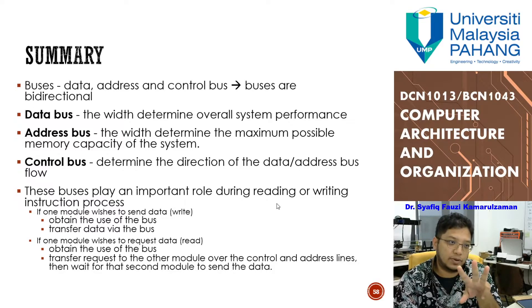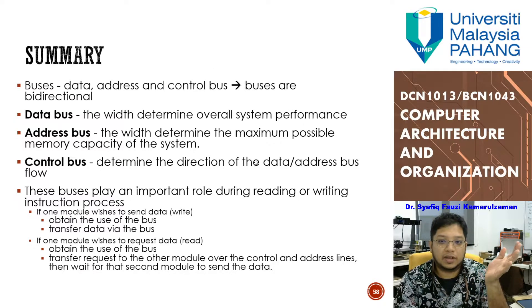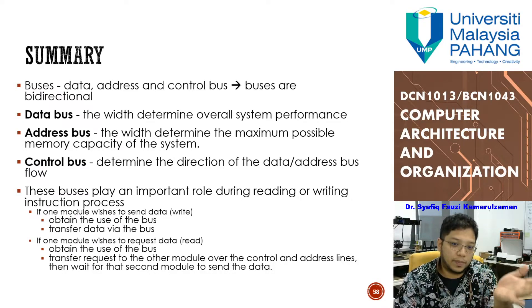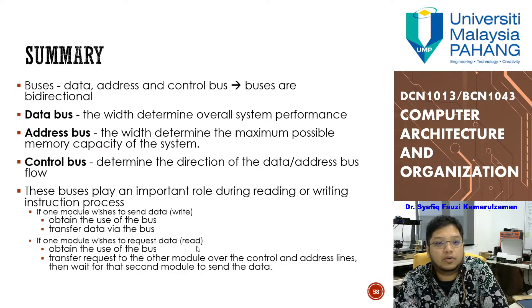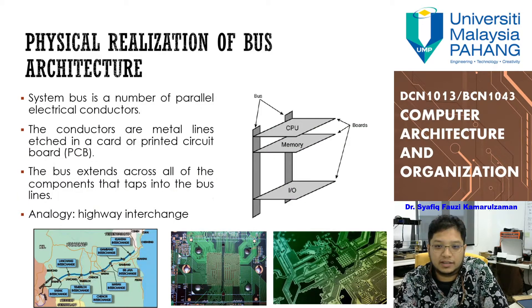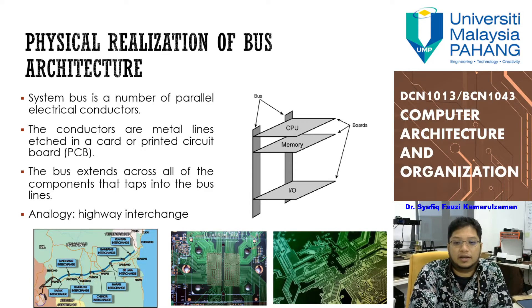On the system bus, you need to know three things: the data bus, address bus, and control bus. The data bus width determines overall system performance based on the size of data it carries. The address bus width determines the maximum possible memory capacity of the system. The control bus determines the direction of data and address bus flow. Physically, buses look like cables inside your PC interconnecting components on the motherboard — you can imagine them as highways connecting cities.